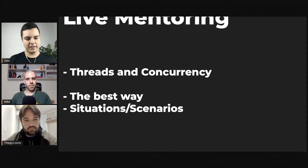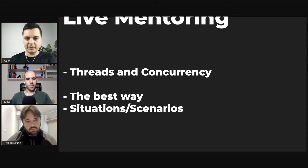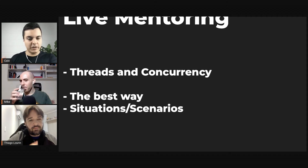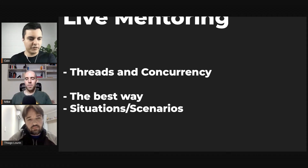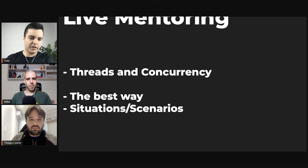That's where threads come in. A thread of execution is just a sequence of instructions that can run independently from other sequences of instructions, from other threads of execution. For example, you can run a network request independently of the UI updates — you're still interacting with the UI while the request is running in the background in a separate thread, scheduled by the system to run concurrently.